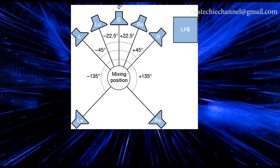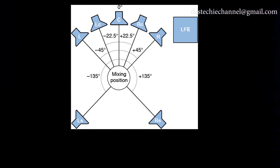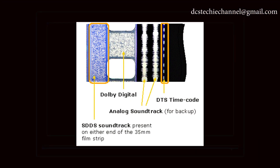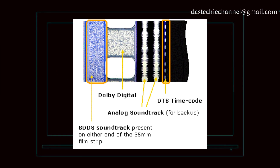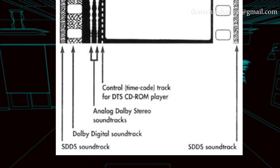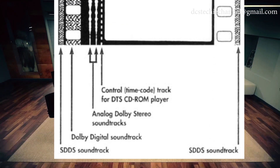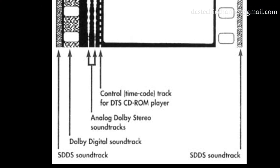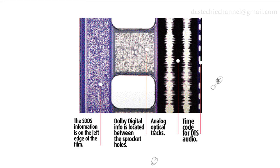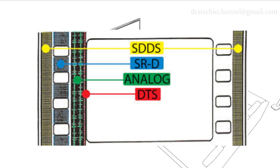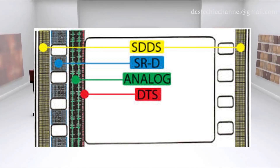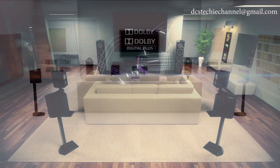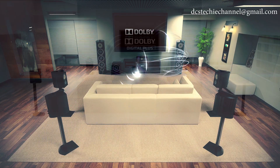You can see that even the angles of speaker positions in SDDS are different from regular Dolby and DTS. All three formats — Dolby, DTS, and SDDS — can be encoded in one film print. If any issues arise in the system of Dolby, DTS, or SDDS, then the sound will get played from the analog track in the film.